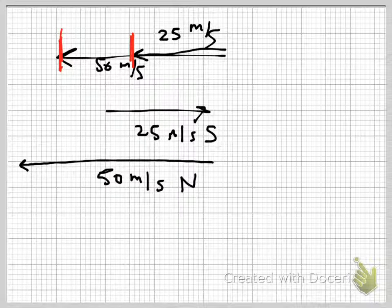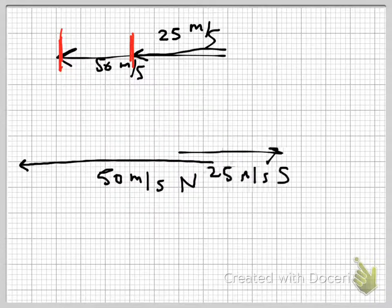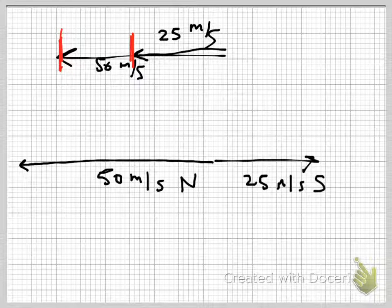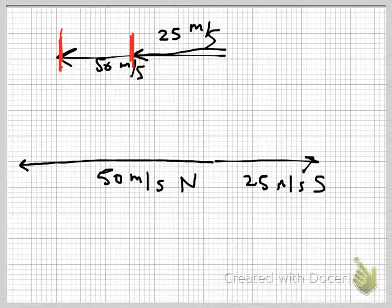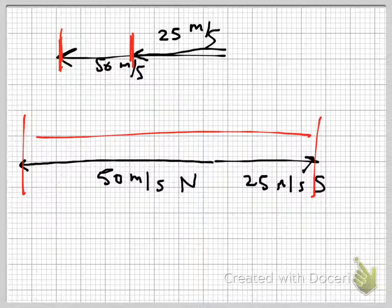If we go back to our example where you're going in opposite directions, and you're going 25 meters per second south, they're going 25 meters per second north. If we line up the tails of these two things, we get our answer, 75.